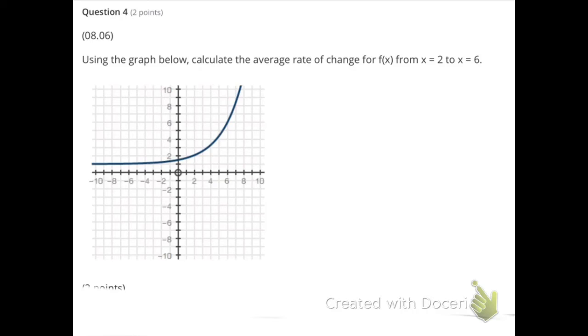Number four, using the graph below, calculate the average rate of change from two to six. So from two to six, where the x is two and x is six. When x is two, y is two. When x is six, y is six.